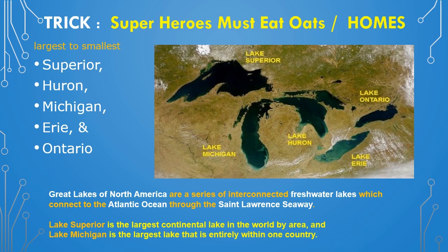S for Superior — this is the largest continental lake in the world. H for Huron, taken from the H of Heroes. M for Michigan, taken from Must — this is the third largest lake of the top five. E for Erie — this is the fourth one, the second smallest. And Ontario is the smallest one.